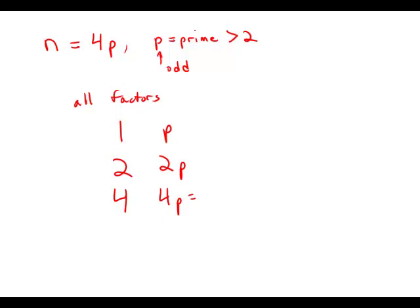And 4p, that's actually the value of n itself, 4p is a factor. There are six factors altogether.